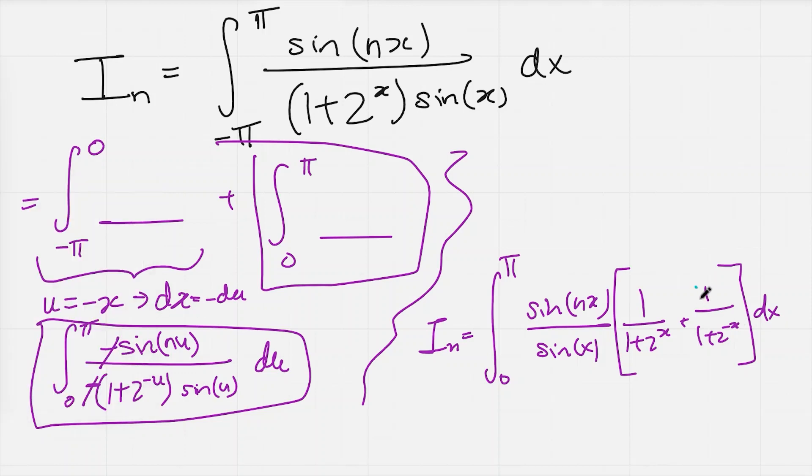So this 1 becomes 2 to the x and this 2 to the minus x just becomes 1. And now the denominators are the same. So I can bring this all under one denominator. And I've got 1 plus 2 to the x divided by 1 plus 2 to the x. And of course, that is just 1.